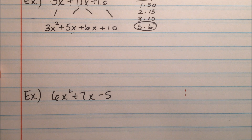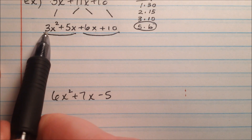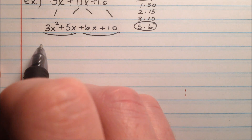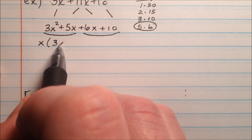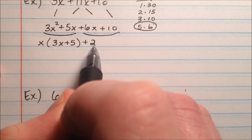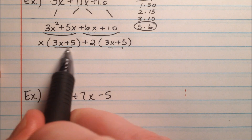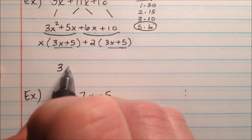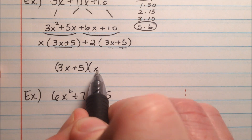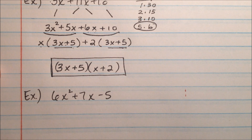The quadratic term and the constant just come along for the ride, so we have 3x² + 5x + 6x + 10. Now it's factor by grouping time. From the first two terms, 3x² + 5x, we pull out an x, leaving 3x + 5. From the last two terms, 6x + 10, we pull out a 2, also leaving 3x + 5. Since both groups share 3x + 5, we combine them: (3x + 5)(x + 2). That's our factored form.